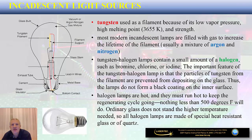Popular incandescent light sources use tungsten as the material that filaments are made out of. Tungsten has a few properties that are very interesting from the perspective of an incandescent light source, among which the most important are low vapor pressure, a high melting point of 3655 Kelvin, and strength.